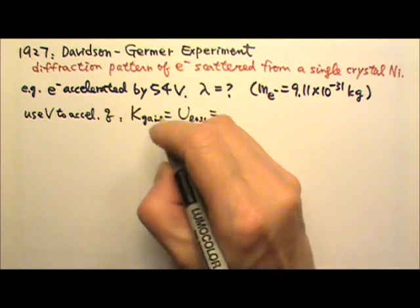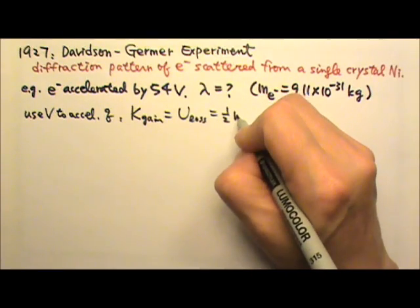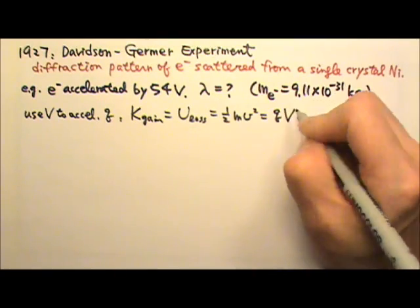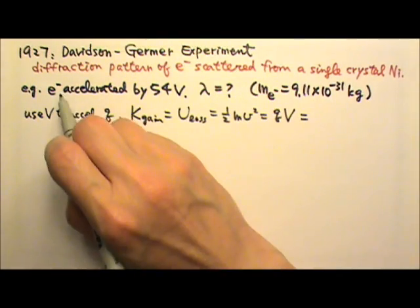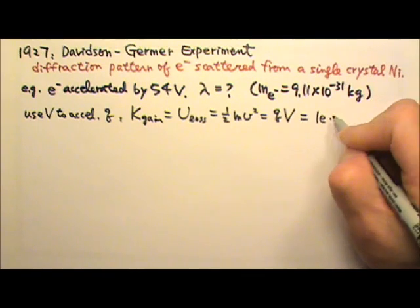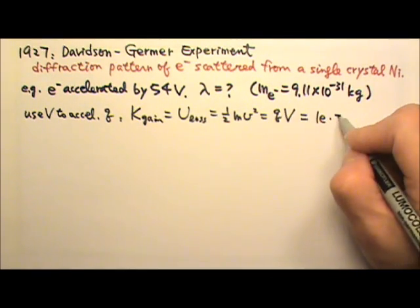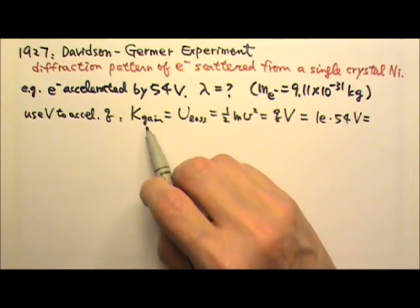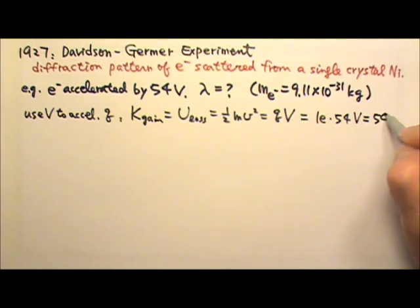The kinetic energy gain in this case is one-half mV squared and U equals QV. So the charge is 1e and the voltage is 54 volts, which means these electrons will have kinetic energy that equals 54 eV.